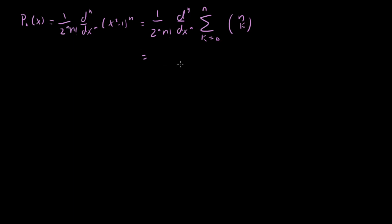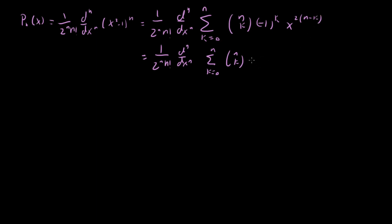One way of writing it is as (-1)^k times x^(2n-2k). Another way is as x^(2k) times (-1)^(n-k). These two are exactly the same — it doesn't matter whether the first term is x² or -1; we can swap them around because it's just a term in the sum. All we have to do now is evaluate the nth derivatives of these expressions.